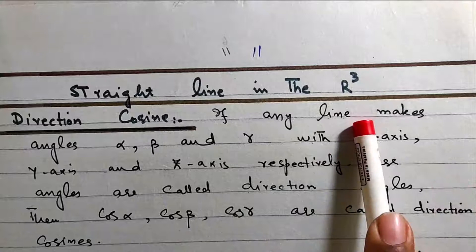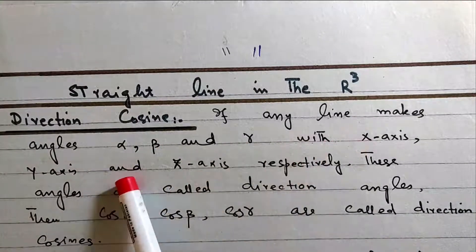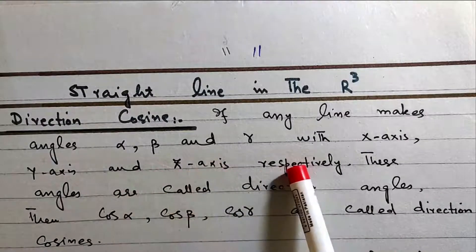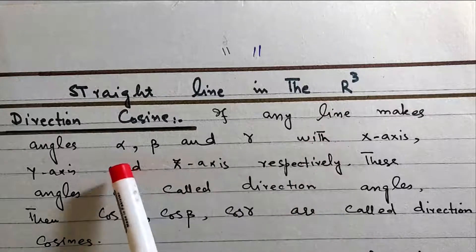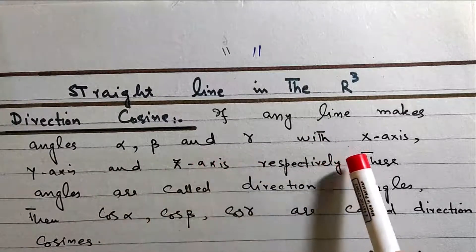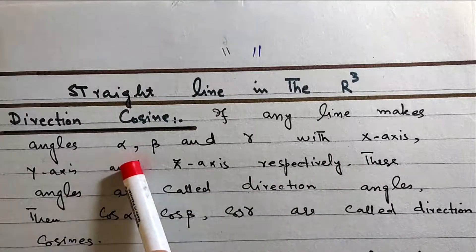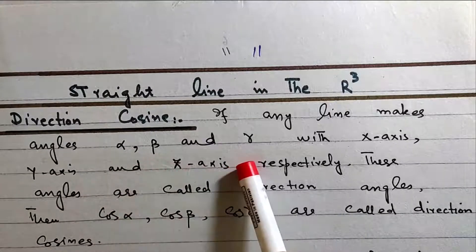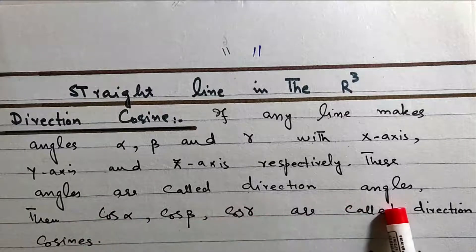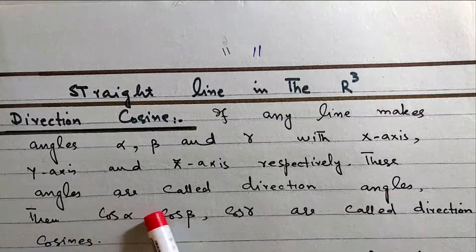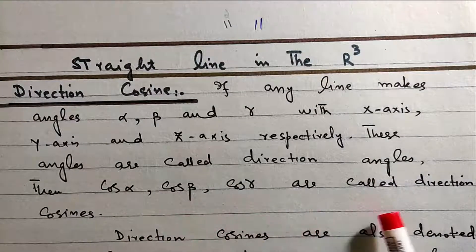Straight line in R³ — Direction Cosines. If any line makes an angle alpha, beta, and gamma with the x-axis, y-axis, and z-axis respectively, then these angles are called direction angles. Then cos alpha, cos beta, and cos gamma are called direction cosines.